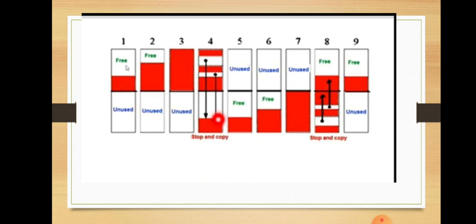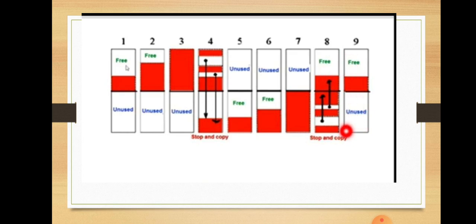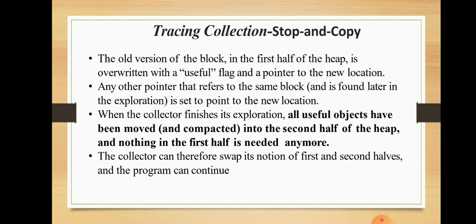The collector can then swap its notion of first and second half, and the program can continue. By using the stop-and-copy method, we can eliminate the disadvantages of steps one and three in mark-and-sweep, particularly external fragmentation.